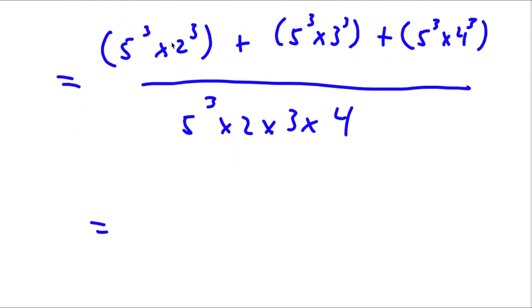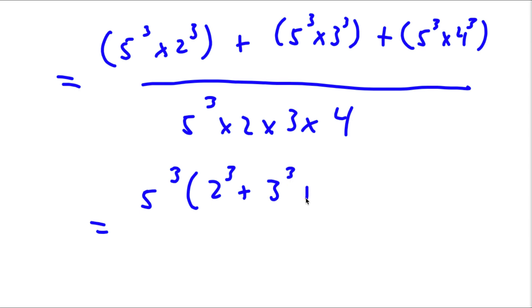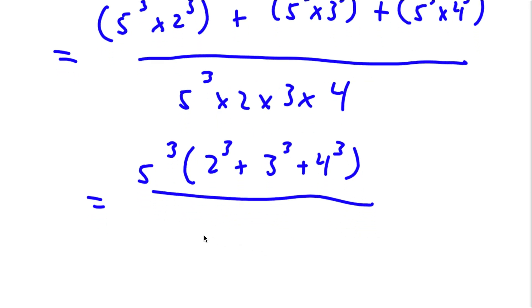Now this is equal to: if I factor out 5³ from the numerator, I get 5³ times (2³ + 3³ + 4³), all over 5³ times 2 times 3 times 4.